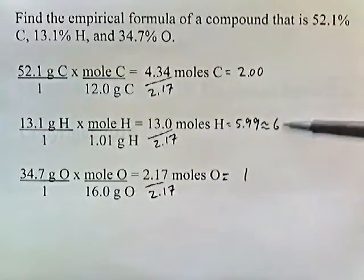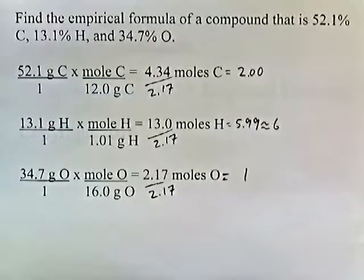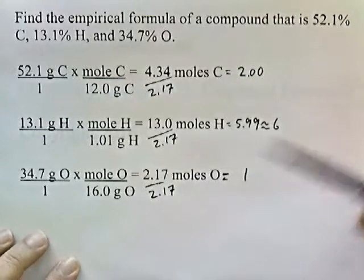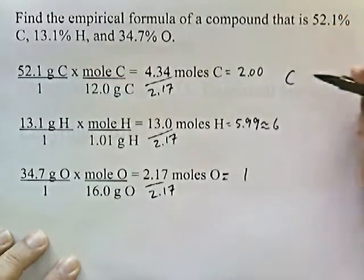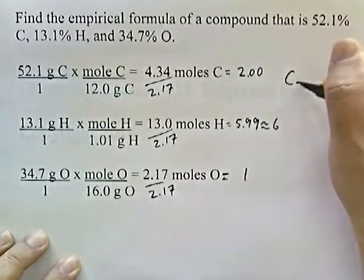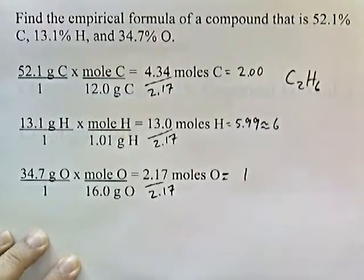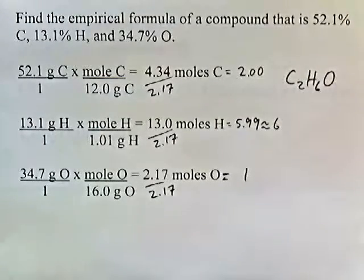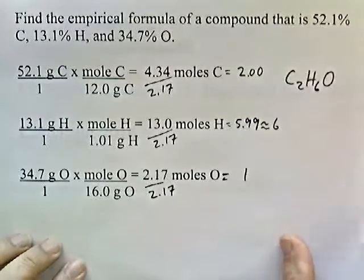Now, each of these is either very, very close to a whole number, or they are whole numbers. So we don't need to use the if-then chart. So since we don't need to use the if-then chart, the ratio of carbon to hydrogen to oxygen is 2 to 6 to 1. So the empirical formula of this compound is C2H6O. So there's our answer. That is the empirical formula of our compound.